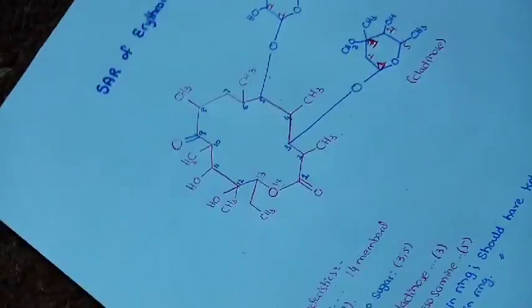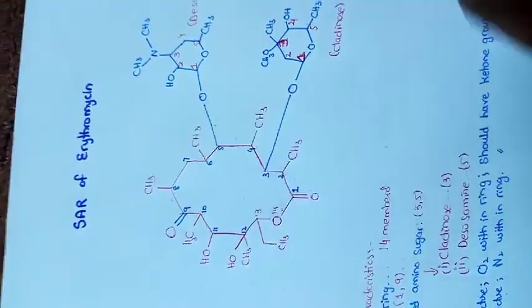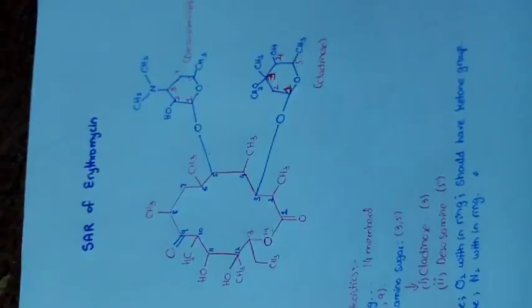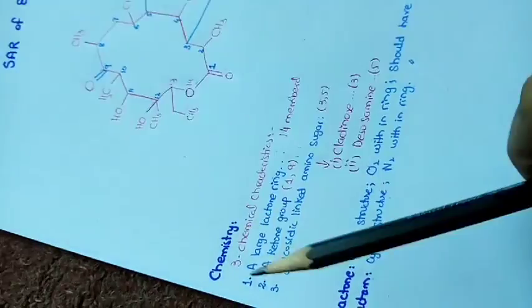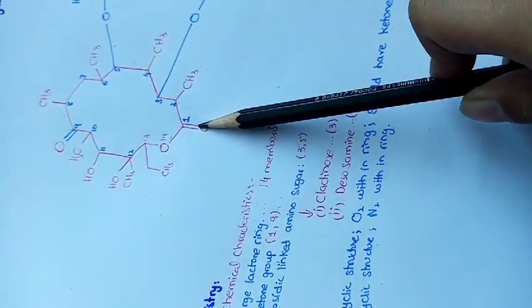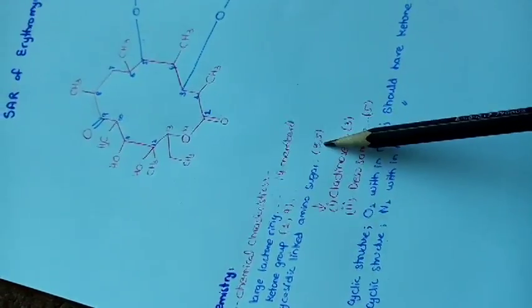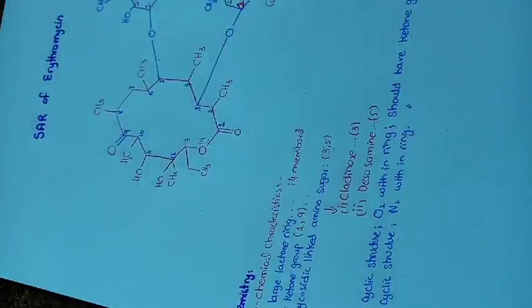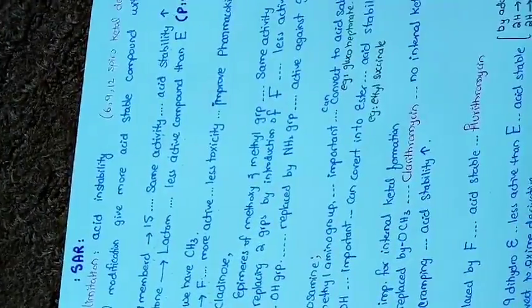This is the structure of erythromycin. It contains a 14-membered lactone ring with two sugars attached at position 3 and position 5. The chemistry of erythromycin includes a large lactone ring which is 14-membered, a ketone group present at position 1 and position 9, and glycosidic-linked amino sugars at position 3 and position 5 by glycosidic bond.